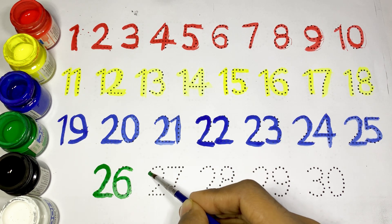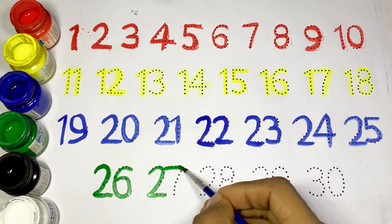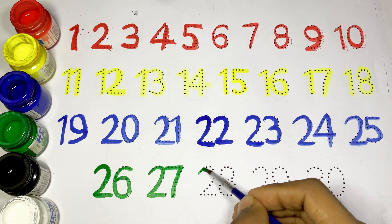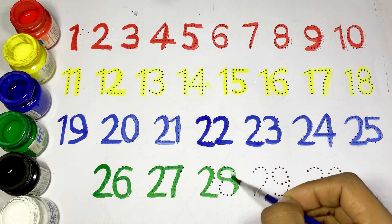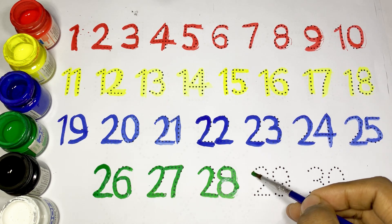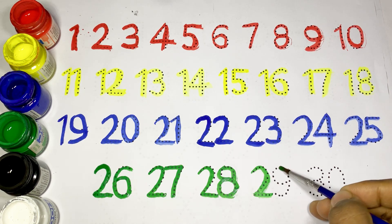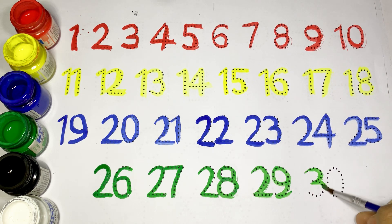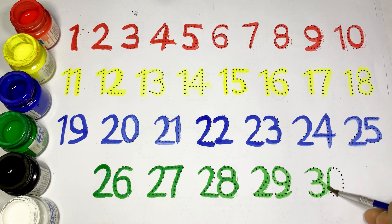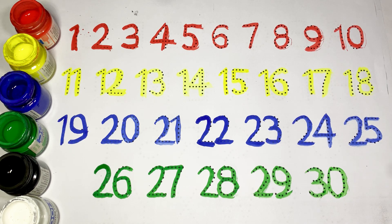27, the number is 27. 28, the number is 28. 29, the number is 29. 30, the last number is 30. Thank you so much for watching.